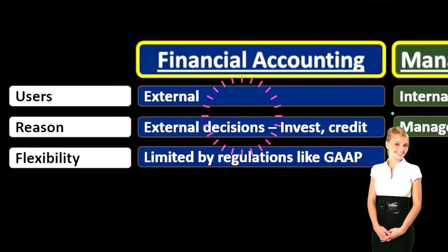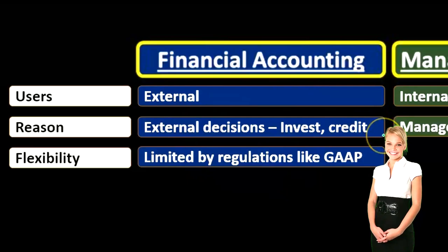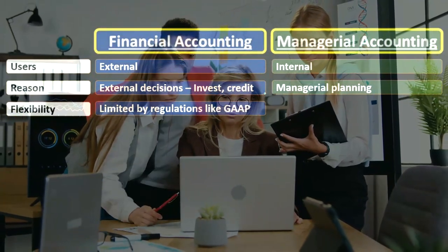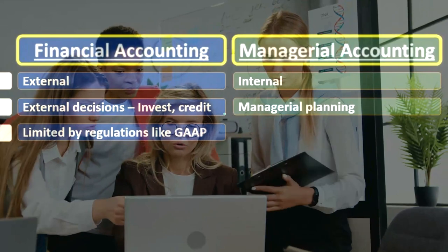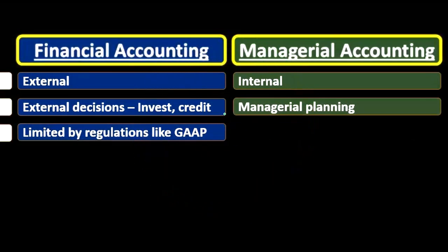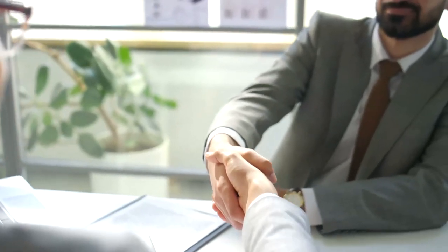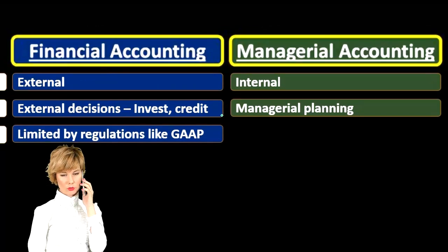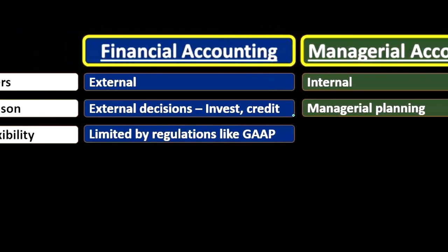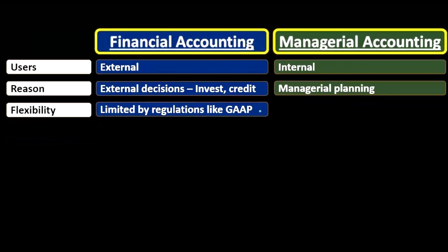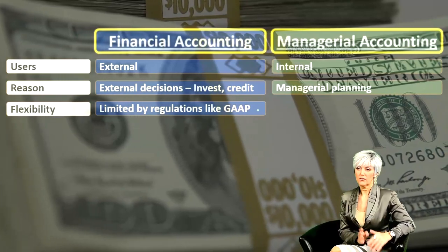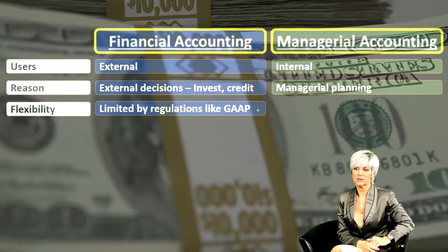Then we have flexibility. Financial accounting is going to be limited by regulations and generally accepted accounting principles in the US. The reason for those limitations is that external users need standardization so they can compare one company's financials to another's. Financial accounting must be standardized in order to build trust with the public — if we're trying to get investments from the public, we have to be in alignment with standards they can expect, so they can read what we're giving them and compare it with other companies.